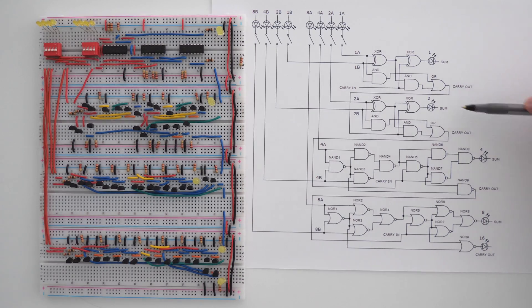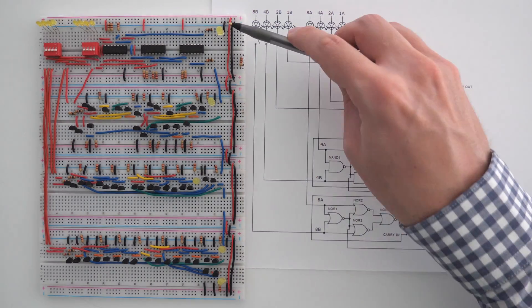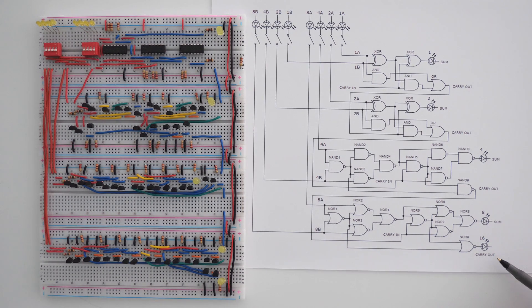The first four LEDs are all the sum bits. So these first four LEDs are the sum bit, and the fifth LED is the last carry out. So this one is the last carry out.